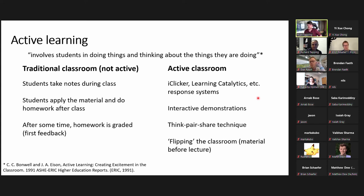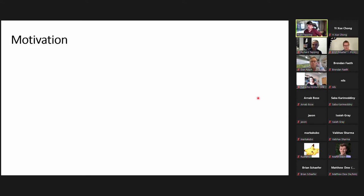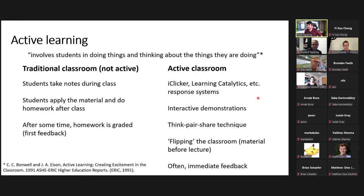A specific implementation of active learning is flipping the classroom, where students do material before the lecture and during lecture emphasize active learning principles. An active classroom is really all about immediate feedback — students are able to demonstrate and give their ideas with immediate feedback, without having to wait until after the lecture or be confused during it.